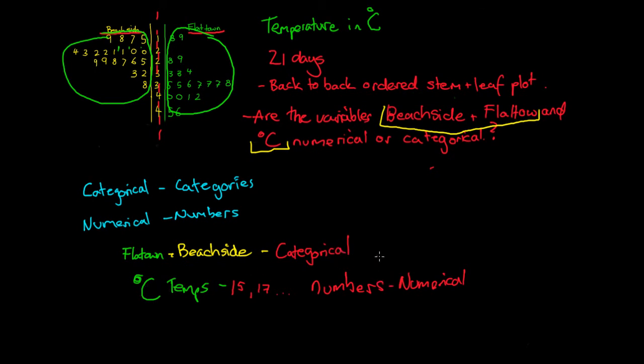So we have two different types. We have one categorical set of data and one numerical set of data. Thanks for that, guys. I'll see you on the next video.